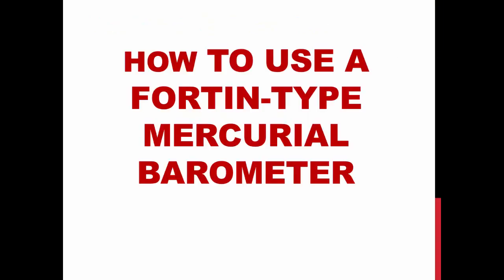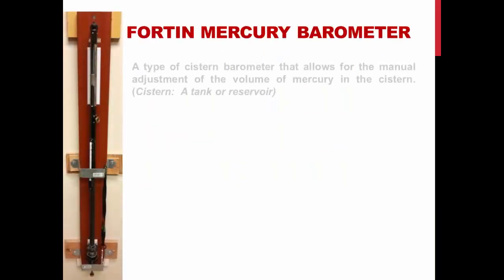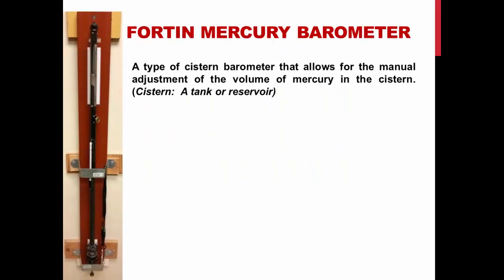How to use a Fortin-type mercurial barometer. The Fortin-mercury barometer is a type of cistern barometer that allows for the manual adjustment of the volume of mercury in the cistern. A cistern is a tank or reservoir.